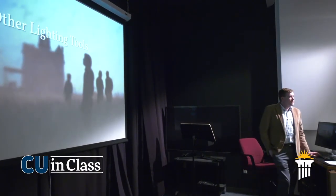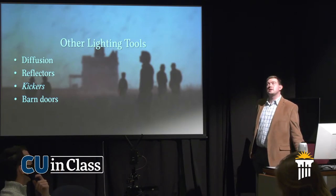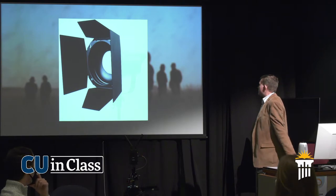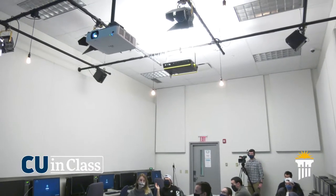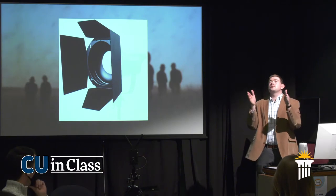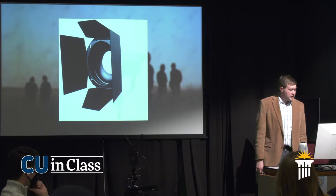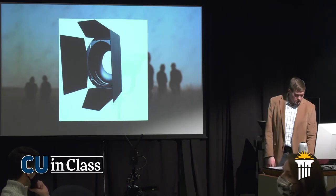Barn doors — what are those? You look above you and see these lights that have these weird-looking things around them. It focuses light so you can have a more concentrated beam — you're not illuminating a whole set, just one specific spot. You use them to close off how much light is pointed at your subject, foreground, background, whatever that is. And we do have them, so you can use them to your advantage.